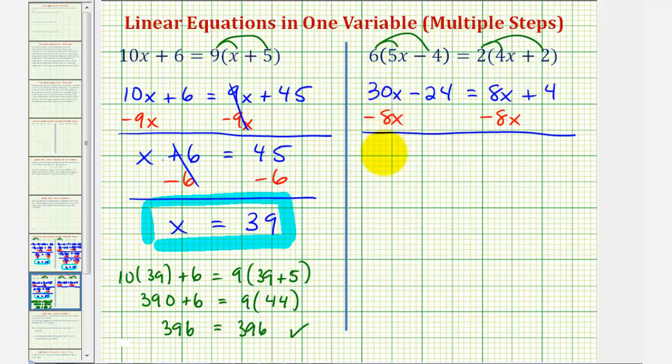30x minus 8x is 22x. So we have 22x - 24 equals, on the right side, this would be zero. So we just have 4.